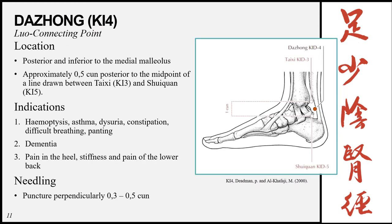Dazhong, Kidney 4, is the luo connecting point of the kidney meridian, located posterior and inferior to the medial malleolus. To locate it, find Kidney 3 and Kidney 5, find the midpoint between them, then go 0.5 cun posterior to that midpoint. Indications: hemoptysis, asthma, dysuria, constipation, difficult breathing and panting, dementia, and locally pain in the heel, stiffness, and pain in the lower back. Needling: perpendicular 0.3 to 0.5 cun.